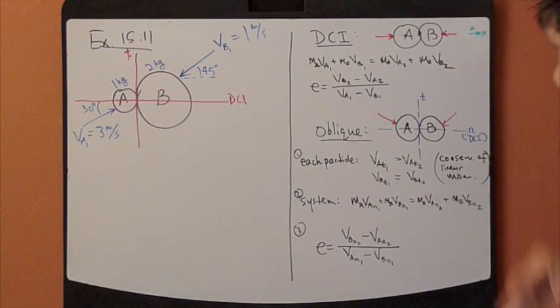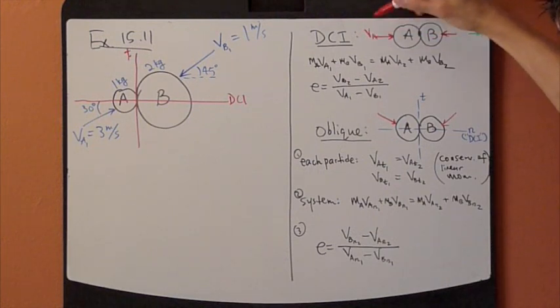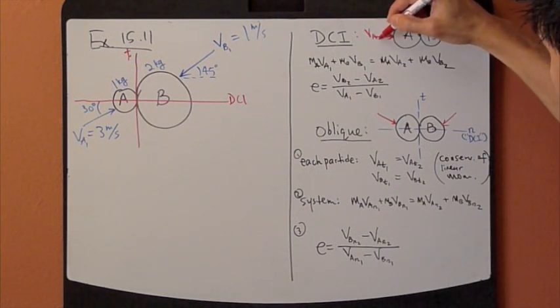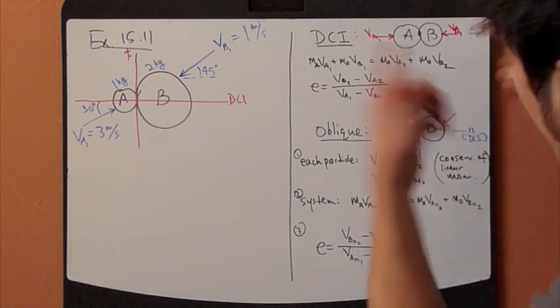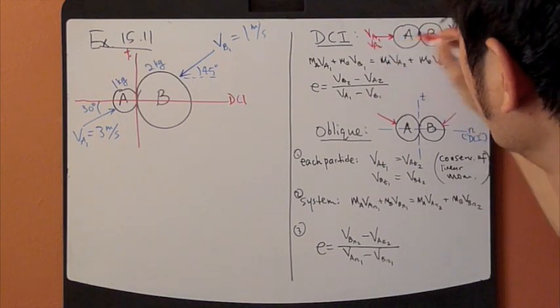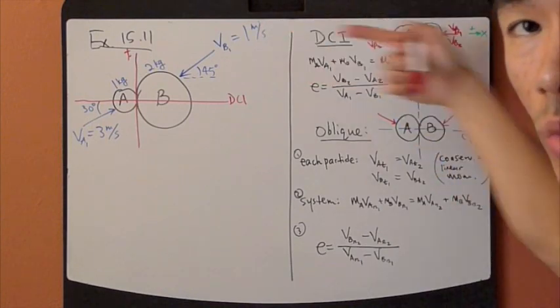It's very straightforward. So this is your VA1 and VB1 before. And after impact, VA2 and VB2 will be along the same direction as well.